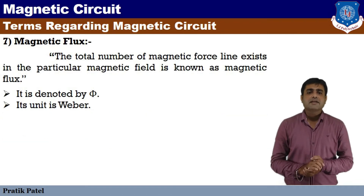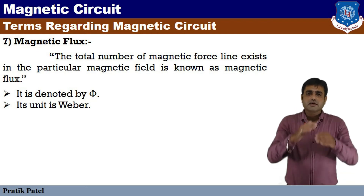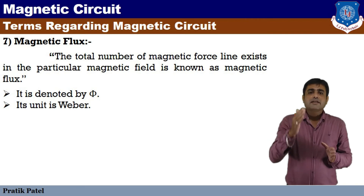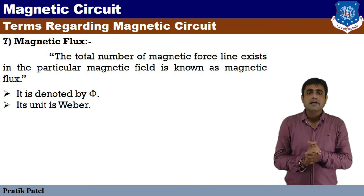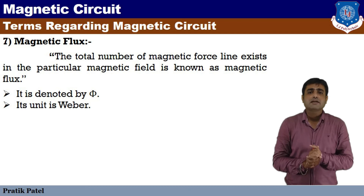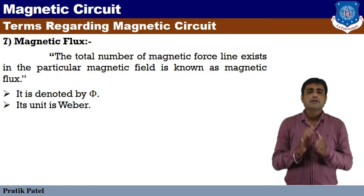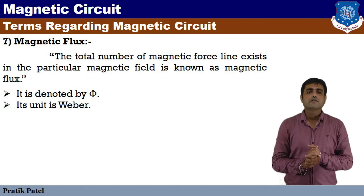Next we see magnetic flux. When we talk about a magnetic field, there are magnetic force lines present. The total number of magnetic force lines existing in a particular magnetic field is known as magnetic flux. It is denoted by phi and its unit is Weber.